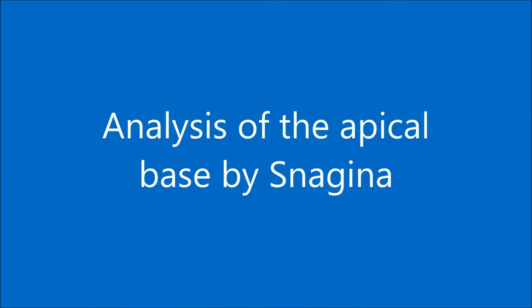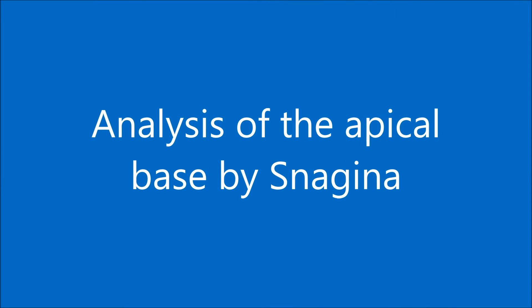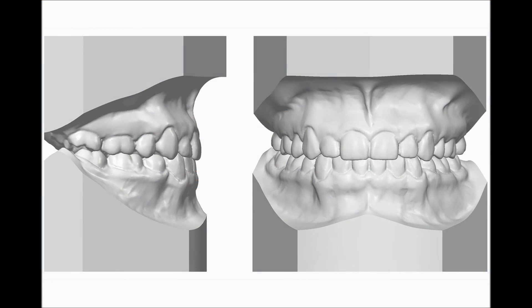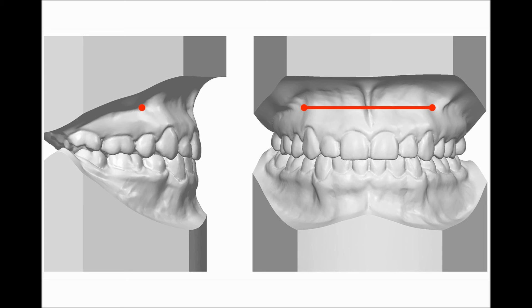Analysis of the apical base by Snagginer. Snagginer found a relationship between the total width of the mesodistal diameters of 12 permanent teeth and parameters of the apical bases of the jaws. Width of the apical base is measured in the canine fossa on the maxilla. Mandibular measuring points are located 8 mm below the intersection of the interdental papilla line and perpendicular between the canine and the first premolar.